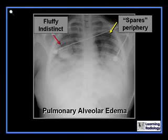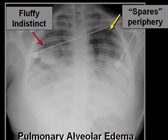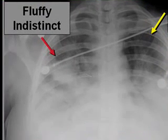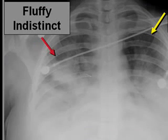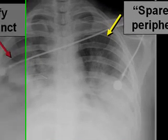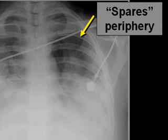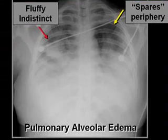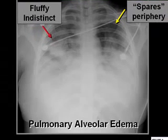Just a few words about pulmonary alveolar edema, usually just referred to as pulmonary edema. When the fluid in the interstitium spills out into the alveoli, it produces fluffy, indistinct, confluent opacities in the lung, which look quite different from those of pulmonary interstitial edema. There is a tendency for pulmonary edema, especially as it relates to congestive heart failure, to spare the outermost portion of the lung, though this is not always true. This is an example of pulmonary alveolar edema.